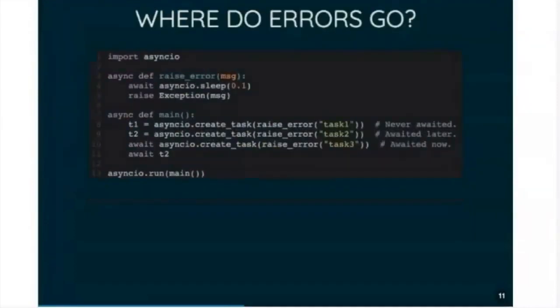So here is one of the big problems with async programming, in Python especially, but in pretty much any async system. Where do errors go? So we have an asynchronous function that waits for a little bit and then throws an exception, and we call it in three different ways.